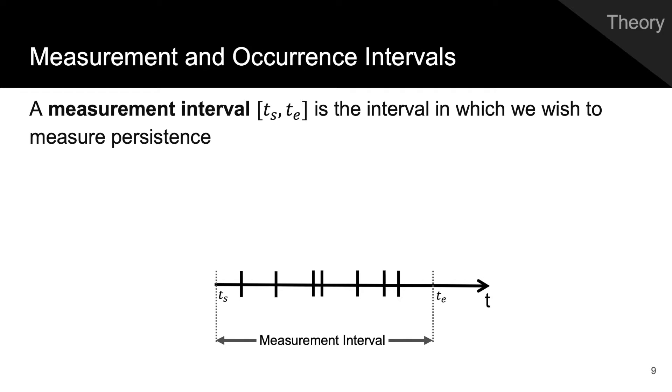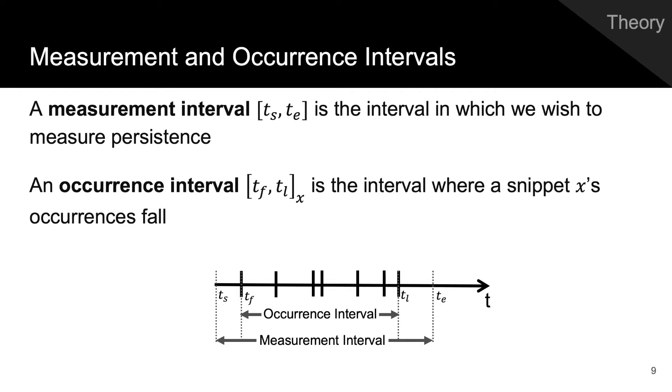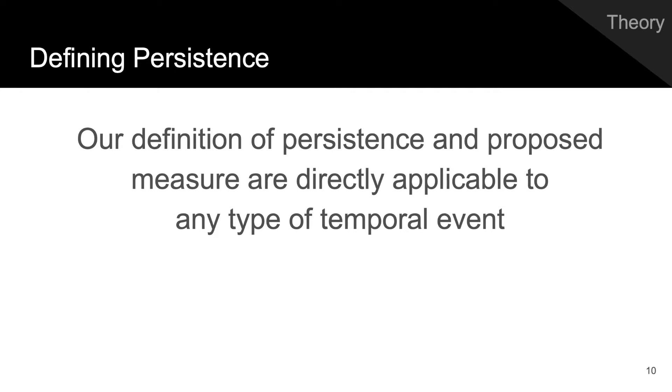Two intervals are important. The first is the interval of measurement, which is the interval of time where we are measuring persistence. The second is the occurrence interval, which is defined with respect to a specific activity snippet and defines the interval where occurrences fall. The theory that follows applies directly to any type of temporal event, even outside the context of networks, but we focus on its application to continually evolving networks.